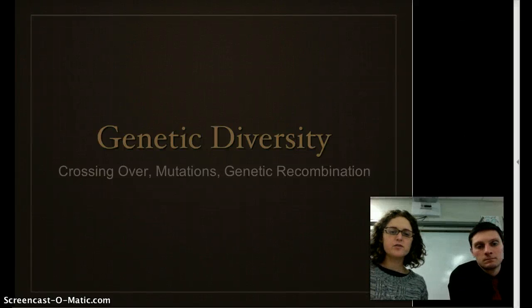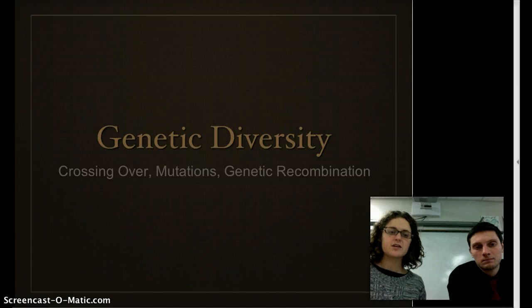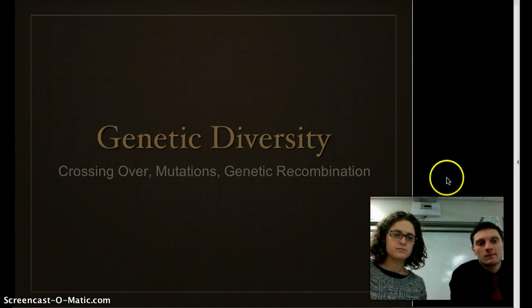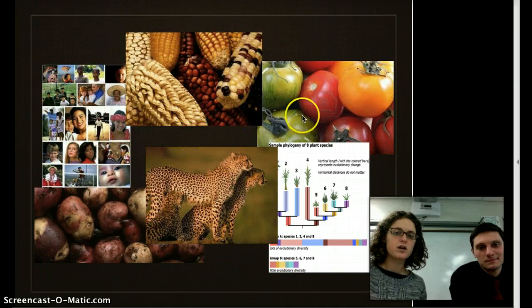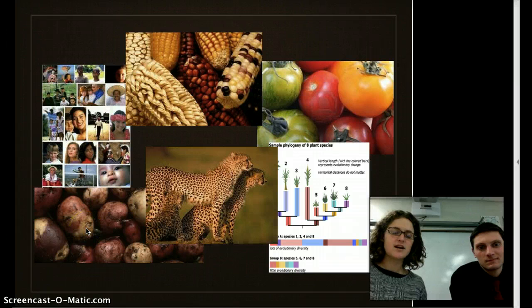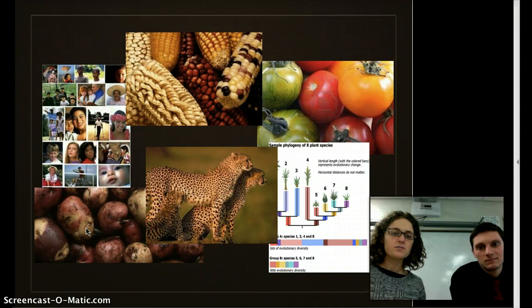Hey guys, today we're going to talk about a few of the ways that we increase genetic diversity in all species, including humans. If you take a look at some of these pictures, you can see within each species — whether it's corn, tomatoes, big cats, or potatoes — that all of them have some diversity within their species in coloring, number of seeds, or strength.